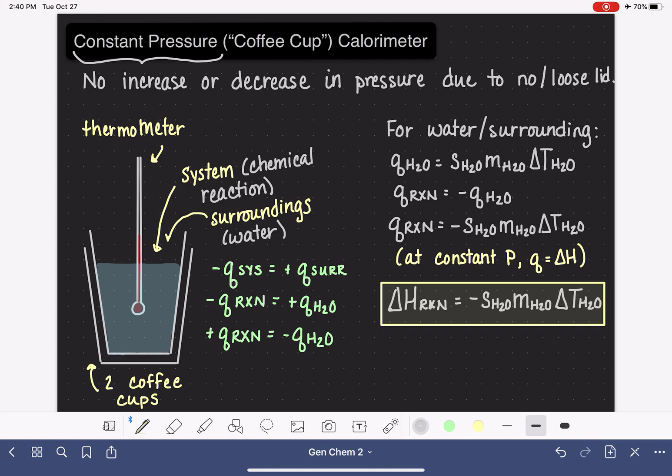If we happen to know the actual heat capacity, C, we can write a different equation: delta H is negative C H2O delta T H2O. But typically, with constant pressure calorimeters, we don't know the heat capacity, we just simply know the mass.